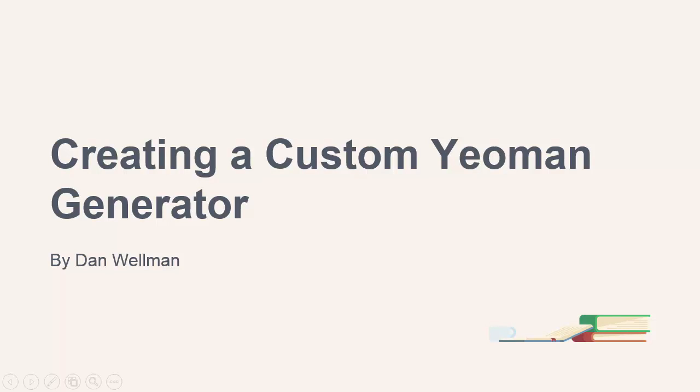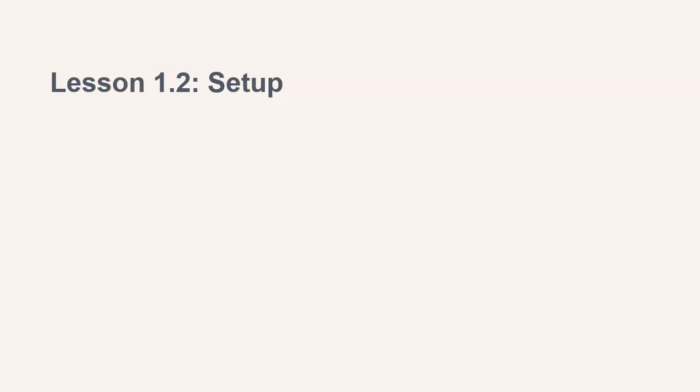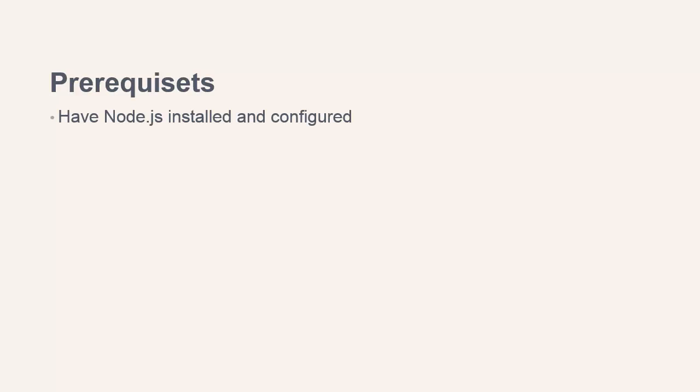Hi folks. In this lesson, we're going to get our system set up and ready to run through the practical examples that follow later in the course. I'm going to assume that you have Node.js installed, but this is really the only prerequisite. Node, as well as Yeoman, are both run from the command line and are used in the same way on Windows, OS X and Linux. Yeoman is installed via NPM, so once Node itself is installed, using Yeoman is pretty much identical on all platforms.